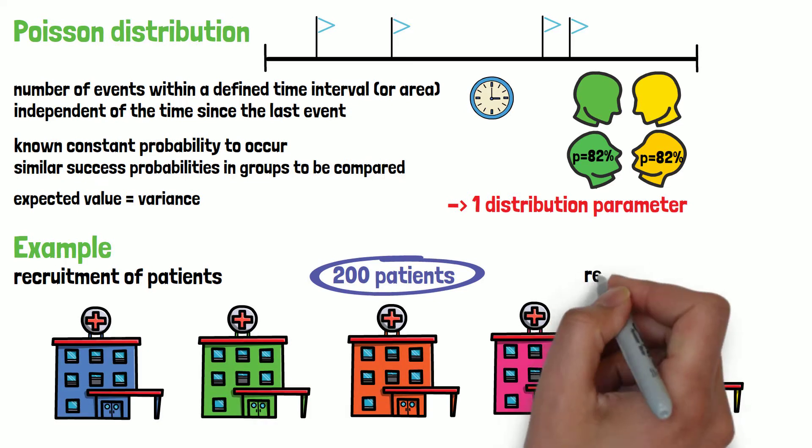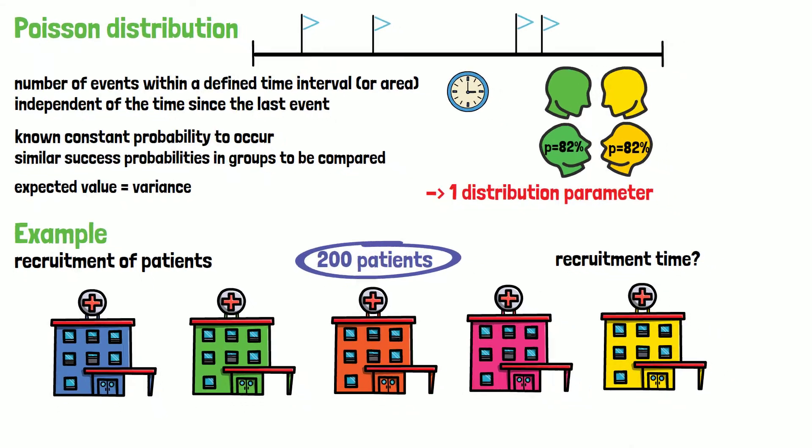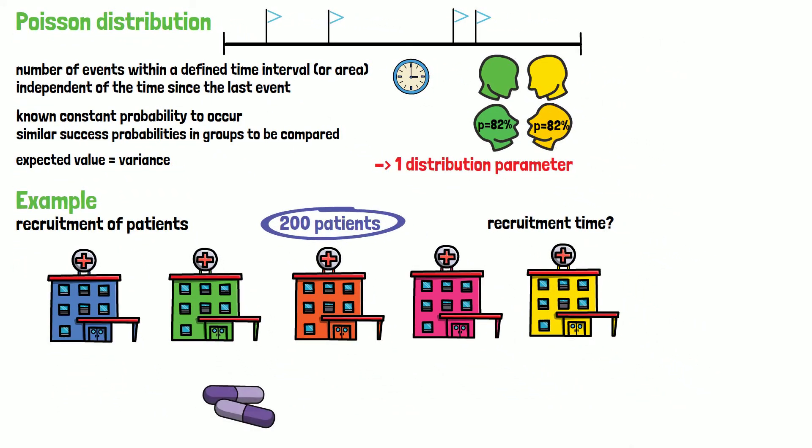When designing the study, it can be of importance to predict the recruitment time and efficiency, as this can have consequences, for example, on the drug supply to the different study sites to meet the patient's demands, or in case an interim analysis is planned, it can have an impact on the power of the statistical test.